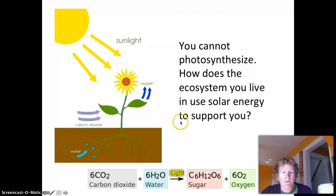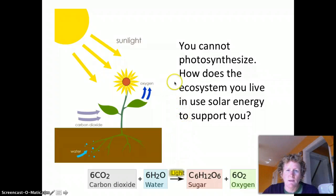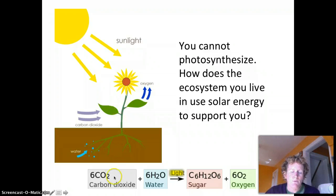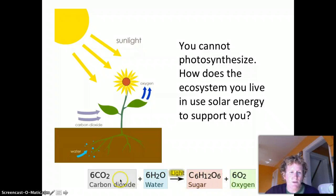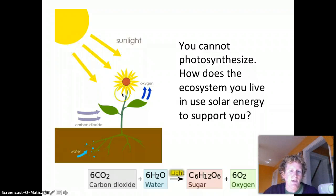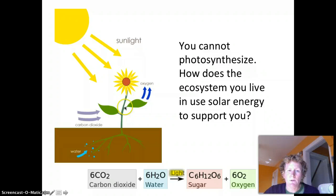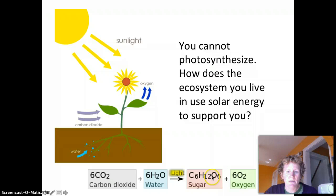Another essay question asks: if you can't photosynthesize, how do ecosystems use solar energy to support you? Photosynthesis is key here. The energy in sunlight is used to combine carbon dioxide and water, which makes glucose that you and I can break down and convert to ATP. The plant can also break down the glucose stored in its leaves.